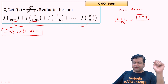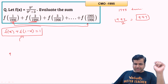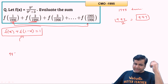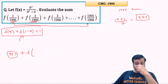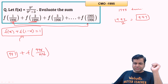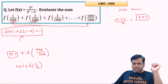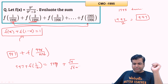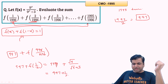So the total sum is 997 plus f of the middle term. The middle term corresponds to n = 998 out of 1996, giving the argument 998/1996 = 1/2. Substituting x = 1/2: f(1/2) = √9/(√9 + 3) = 3/(3 + 3) = 3/6 = 1/2.